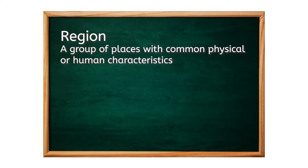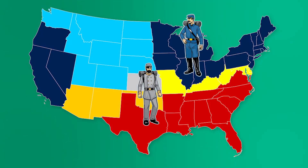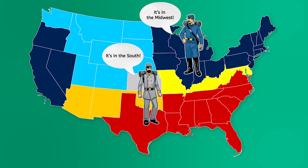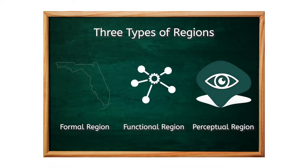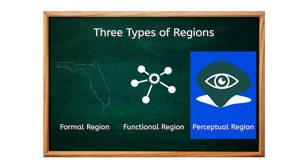A region is a group of places with common characteristics. Sometimes there is general agreement about what these traits are. Other times, as is the case with Missouri, a region is defined by people's perceptions — their particular viewpoint. To start, there are three types of regions: formal, functional, and perceptual.